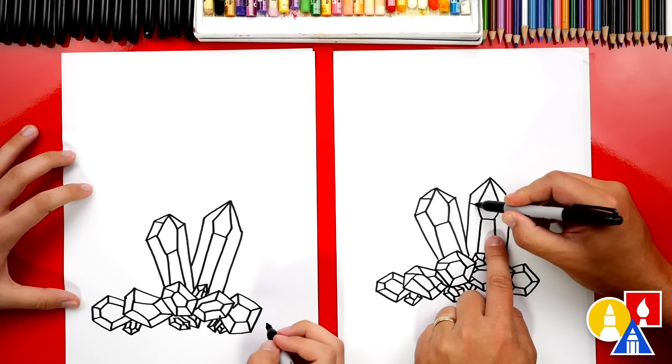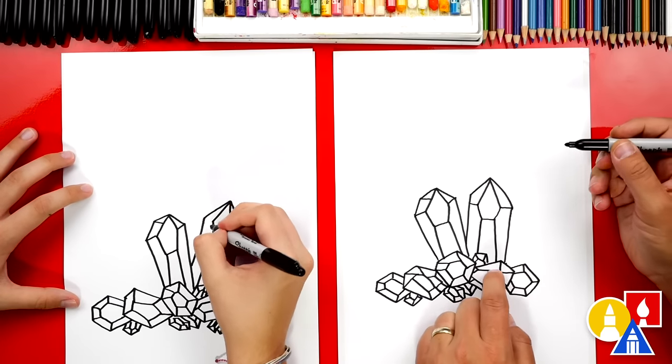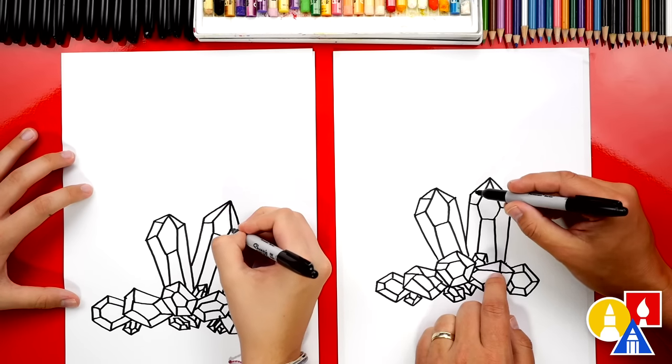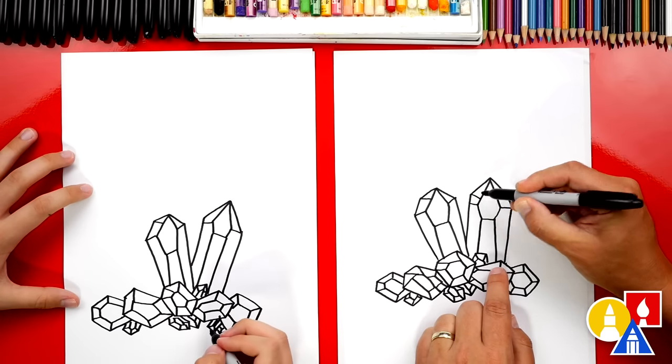And then right here, I'm going to draw lines connecting to the outside. Oh, we have another corner. I'm going to add another facet right there.